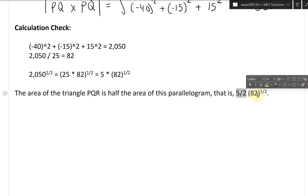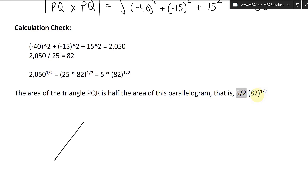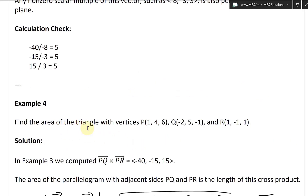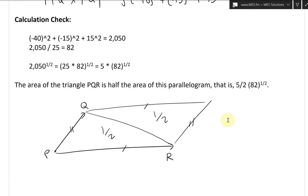So in other words, if we have PQ and PR forming a parallelogram, the triangle area is one half of that. Half and half — we get a triangle. And that was the triangle PQR we were asked to find. So we find the area of the triangle of vertices PQR, exactly as stated.